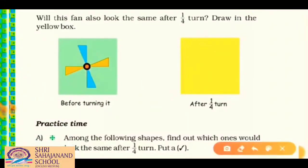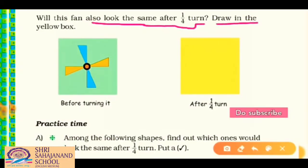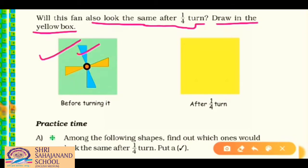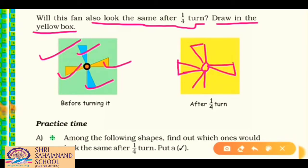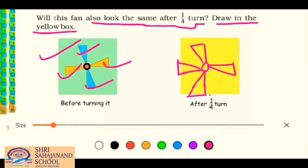Will this fan also look the same after one fourth turn? The blades are the same size but different colors — one blue, one yellow, alternating. Let's draw it. After one fourth turn, we get blue blades on left and right and yellow on top and bottom. So the picture is not looking the same as the previous one.